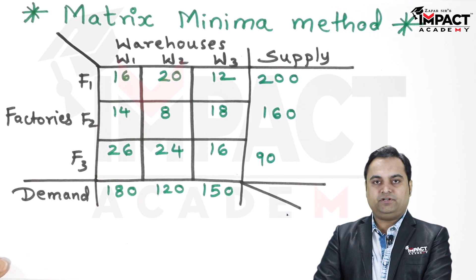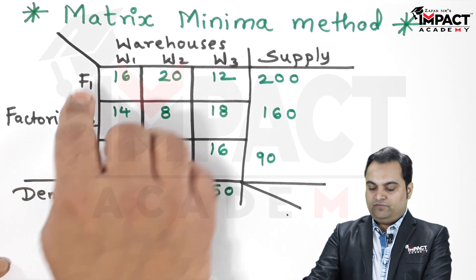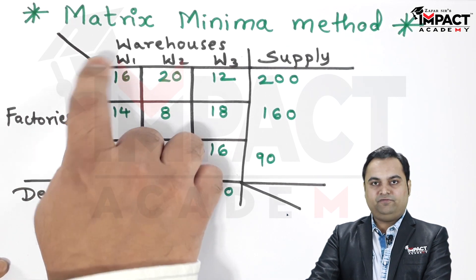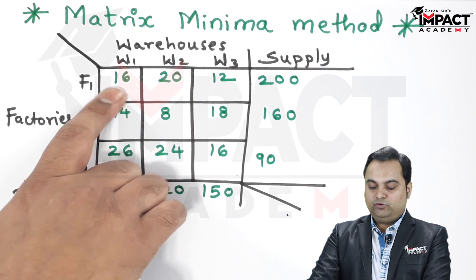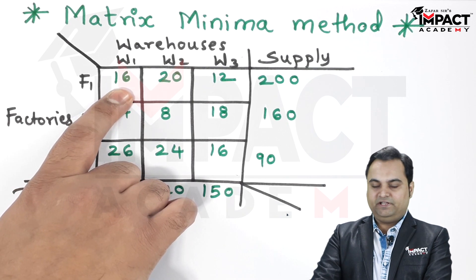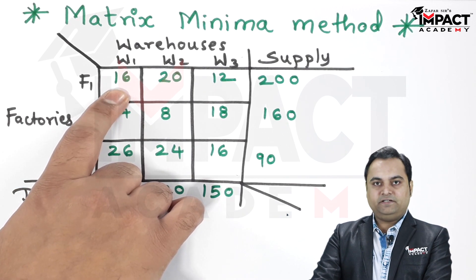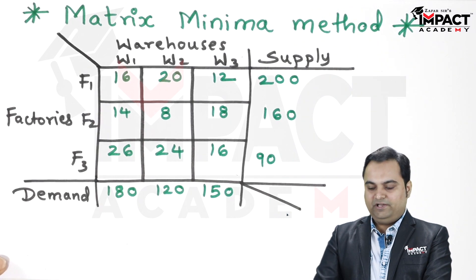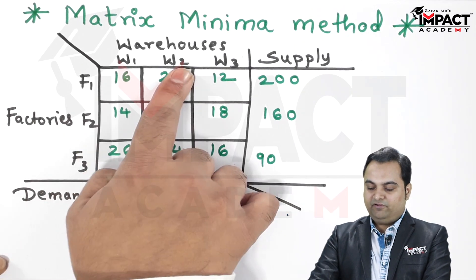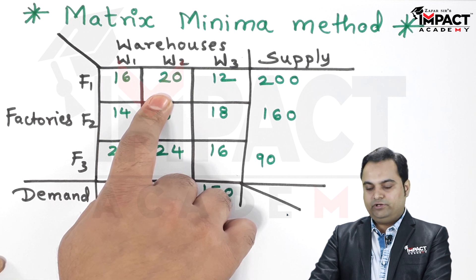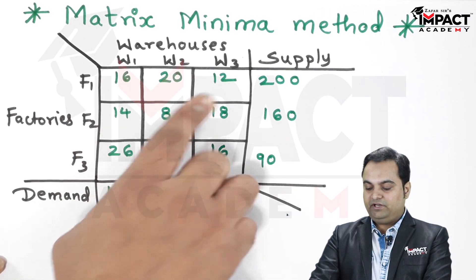Whatever is given in this cell, these are called unit transportation costs. For example, from F1 to W1 if you want to transfer the materials, the unit cost is 16 for one single material. We can multiply it with the total value. Similarly, from F1 to W2 it is 20 unit cost, and from F1 to W3 it is 12.